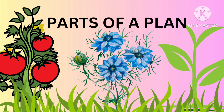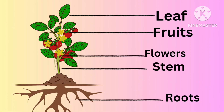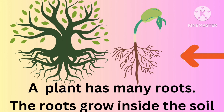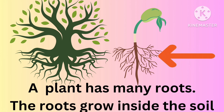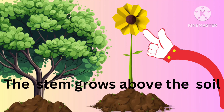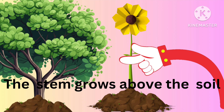Hello kids! In this video we will learn about parts of a plant. There are mainly five parts: leaf, fruits, flowers, stem, and roots. A plant has many roots. The roots grow inside the soil.